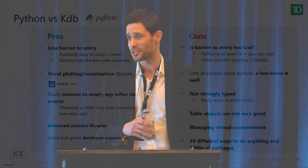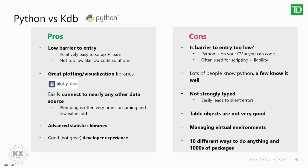Coming from KDB, the fact that Python is not strongly typed is absolutely horrible. It can easily lead to what I call silent errors — where your code runs but the output is garbage. There are things like mypy where you can get around it, but it's not easy. I also can't say table objects are all that good — pandas is a little clunky around the edges, and numpy is a little hard to use, though more performant. The absolute worst thing about Python is managing your own virtual environment and package dependencies — that is a royal pain.